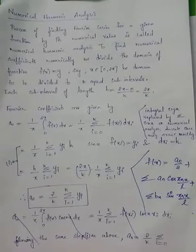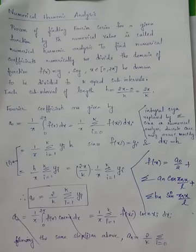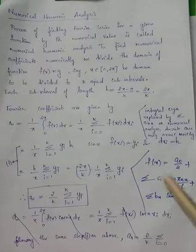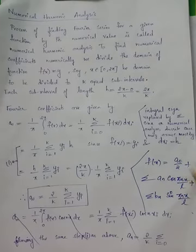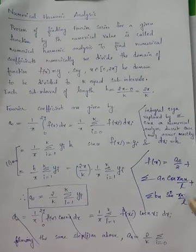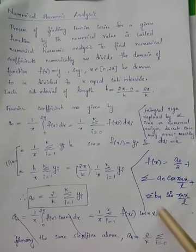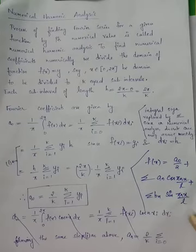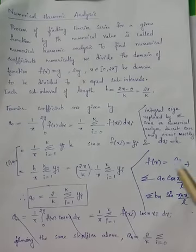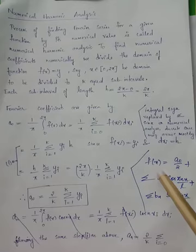This topic is about numerical harmonic analysis which is based on Fourier series. We studied in our previous semesters that Fourier series expansion is possible for a function f(x) which is periodic, and the Fourier series expansion is given by f(x) = a₀/2 + Σ aₙ cos(πnx/l) + Σ bₙ sin(πnx/l), where l is the periodicity of the function f(x).